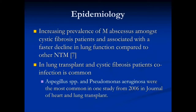Because of the number of cystic fibrosis patients who need lung transplants, it's important to note that M. abscessus has an increasing prevalence in that population, with studies showing faster decline in lung function compared to other NTM infections. Patients are commonly co-infected with other organisms — Aspergillus and Pseudomonas are most commonly reported in one review.